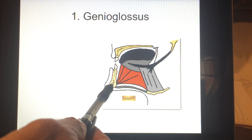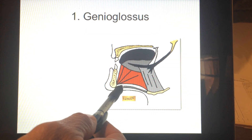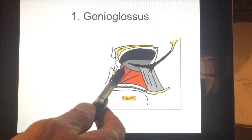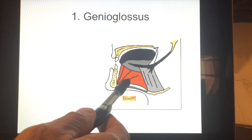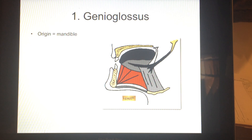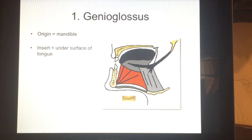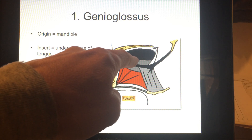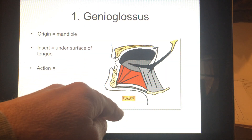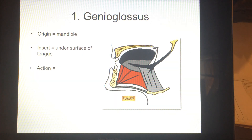This is important for understanding. Notice the origin and insertion — where is the origin relative to the insertion? It is below it and slightly in front. So by manipulating the different fibers, you get two different actions out of this. The origin is the inside of the mandible — that's the genio reference — and the insertion is the undersurface of the tongue, directly under your tongue. Now, action is always based on origin and insertion. Insertions can only go directly to the origin. Since the origin is down, the tongue can go down. Since the origin is slightly in front, the tongue can go forward.